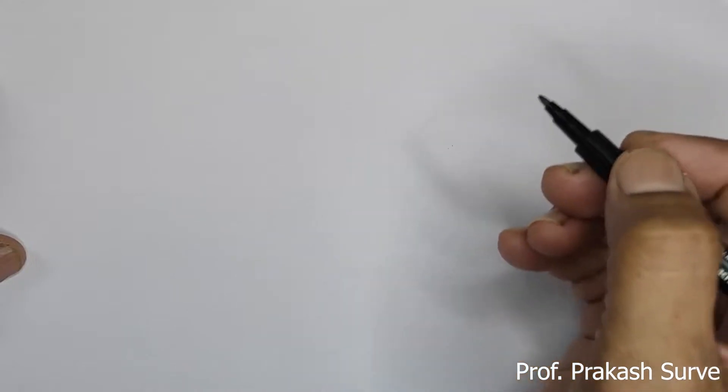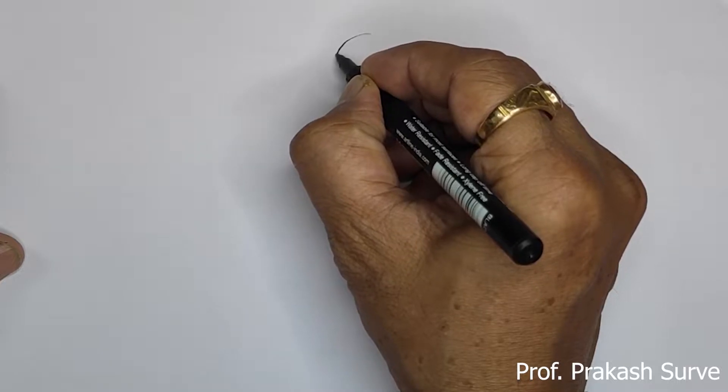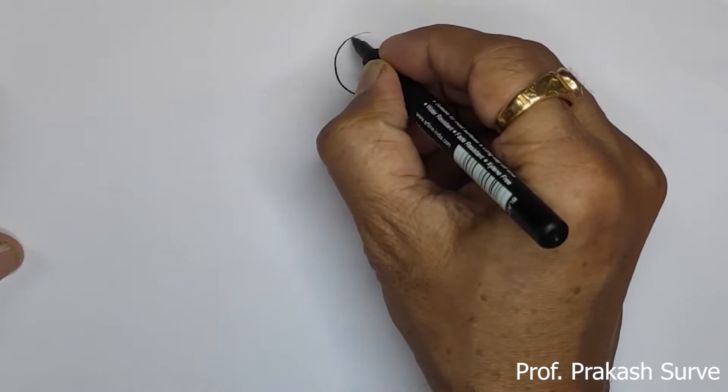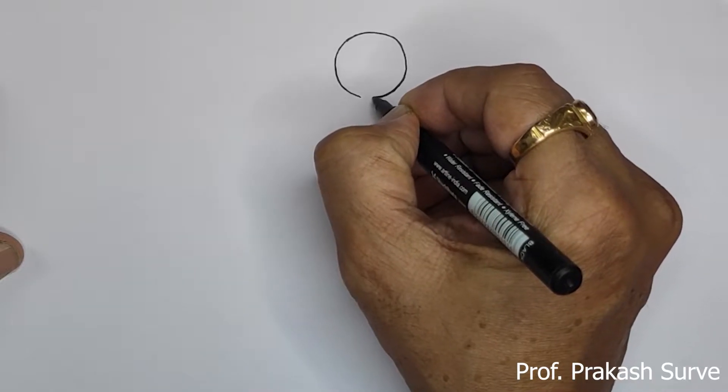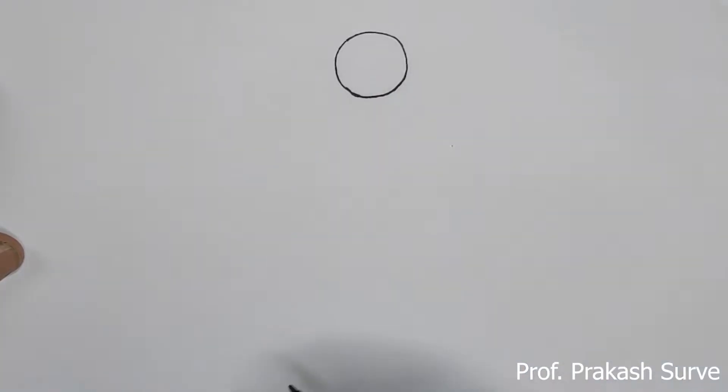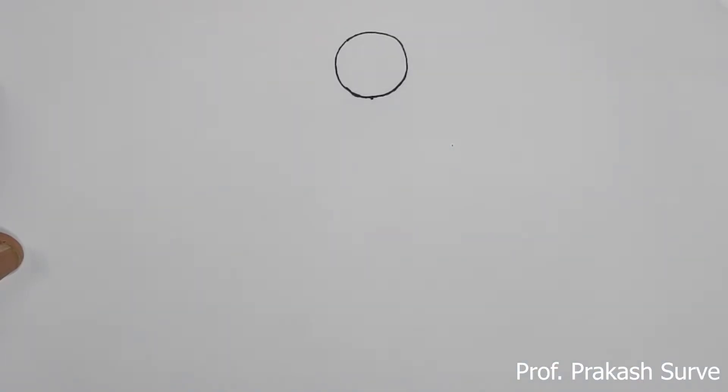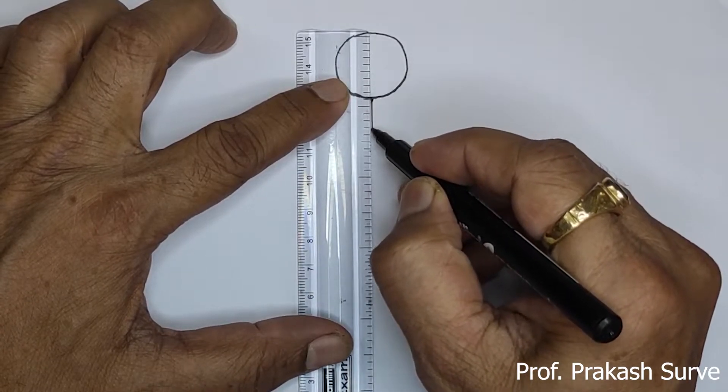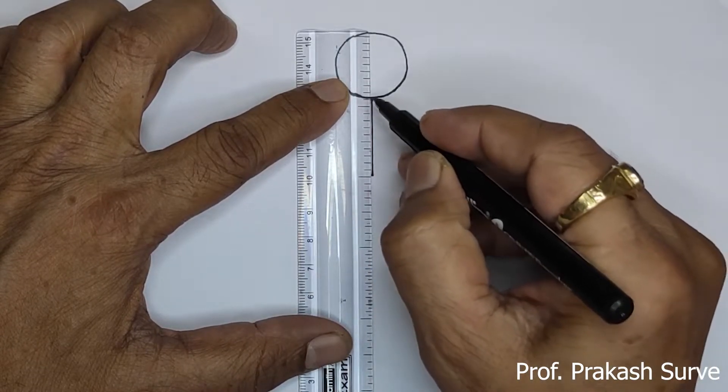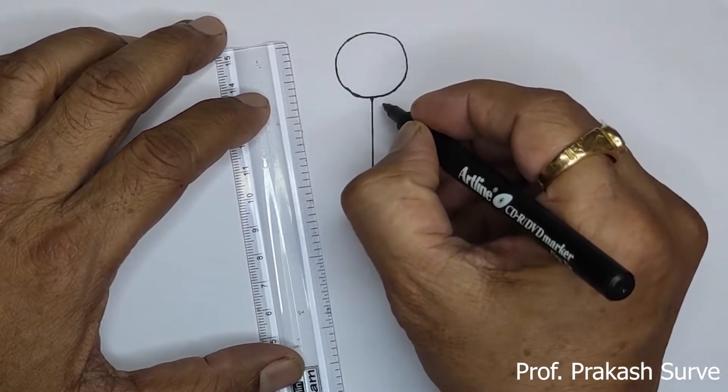First we will start with the glutamic acid for which you have to draw one circle. So this is the glutamic acid. Now make one straight line. So this straight line is one of the strands of the tRNA. This is a 3' end.